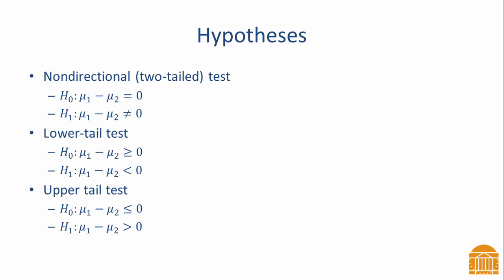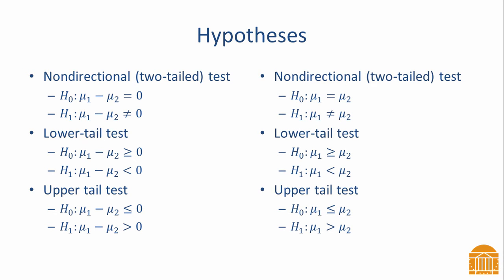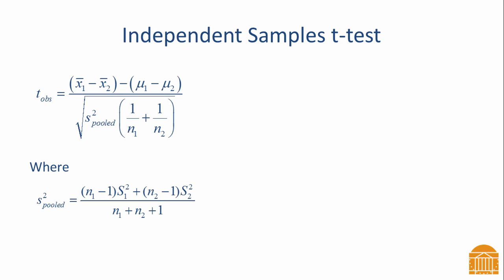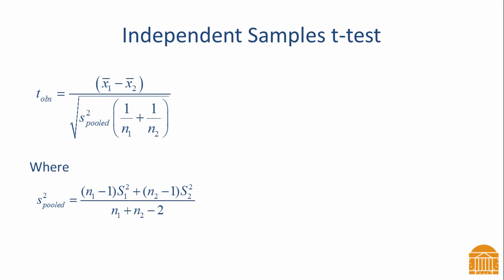There is another way to specify the null and alternative hypotheses. The statements on the right are equivalent to the ones on the left — use either method. However, the method using the difference of means is preferred because it is consistent with the way the test statistic is written. The equation for the independent samples t-test shows the numerator as the difference of sample means subtracted by the difference of population means when the null hypothesis is true. Note that the difference of population means is usually zero, so you will often see the t-test written with only the difference of sample means in the numerator.